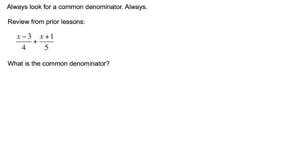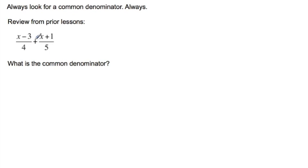Algebraic fractions operate in the same way — you're always looking for a common denominator. Something you may have done before is worked with simple algebraic fractions like (x minus three) over four and (x plus one) over five.